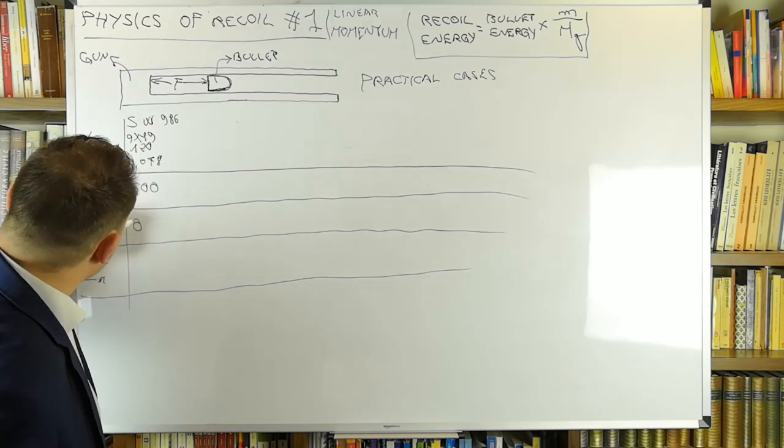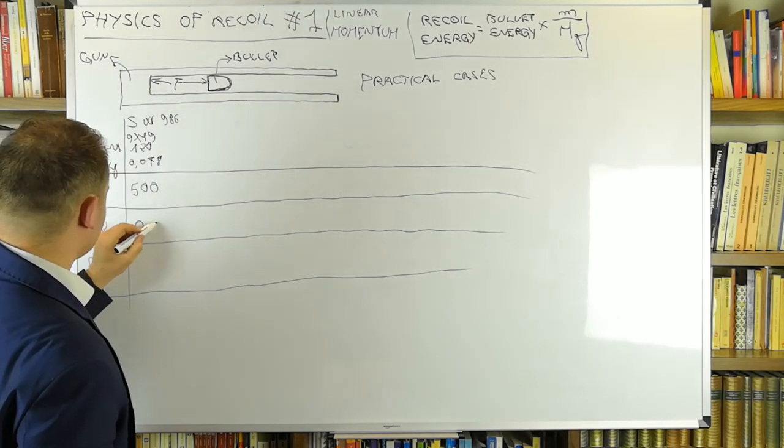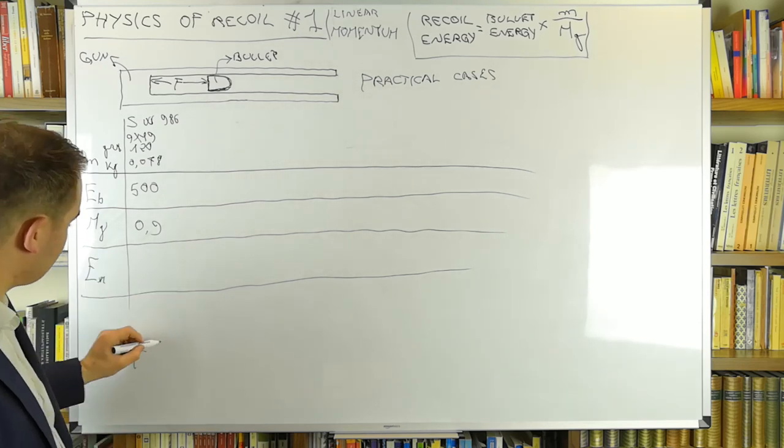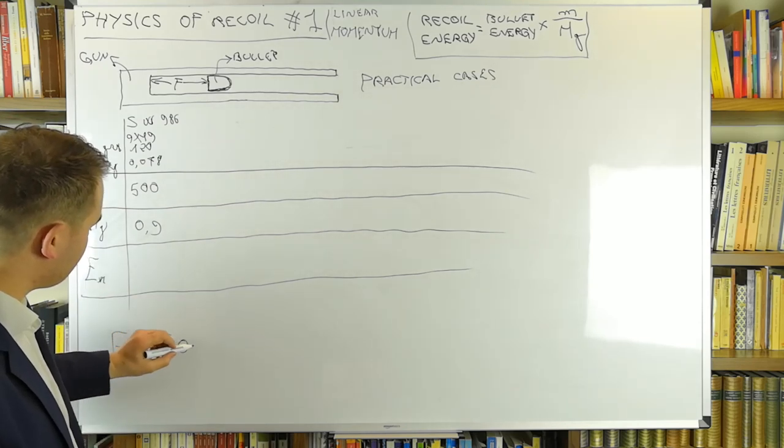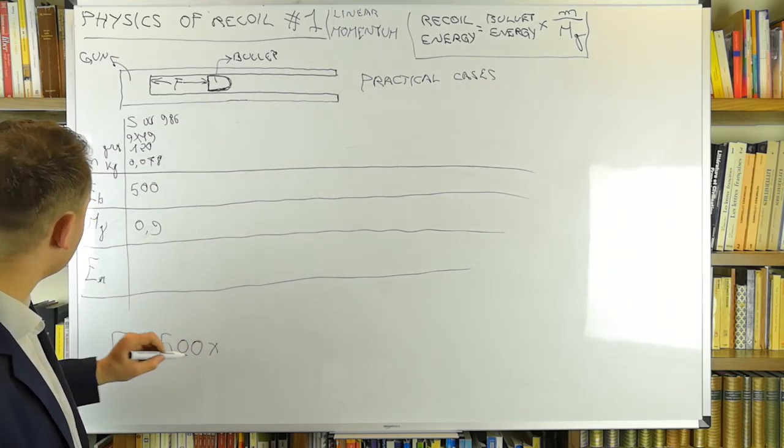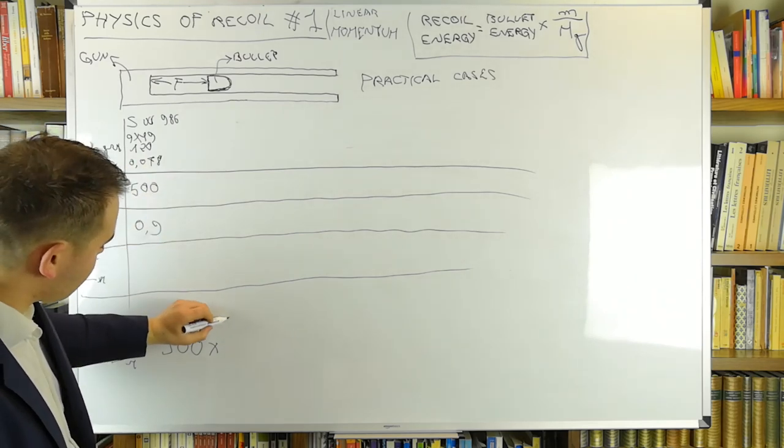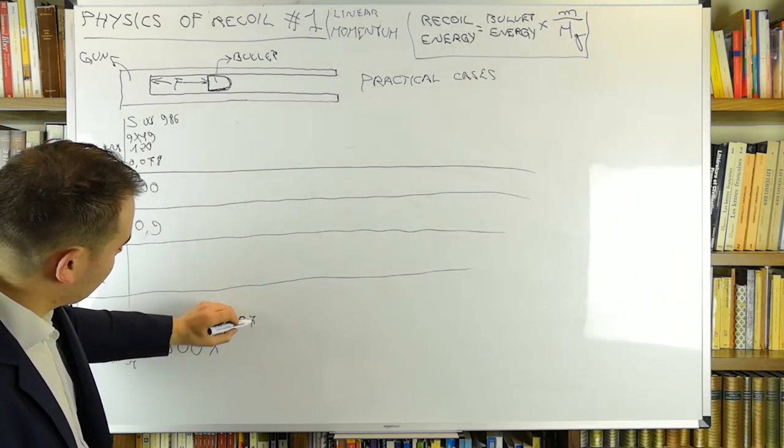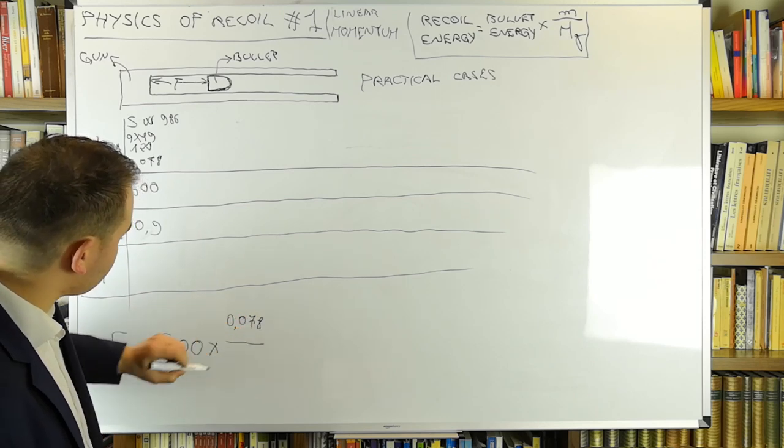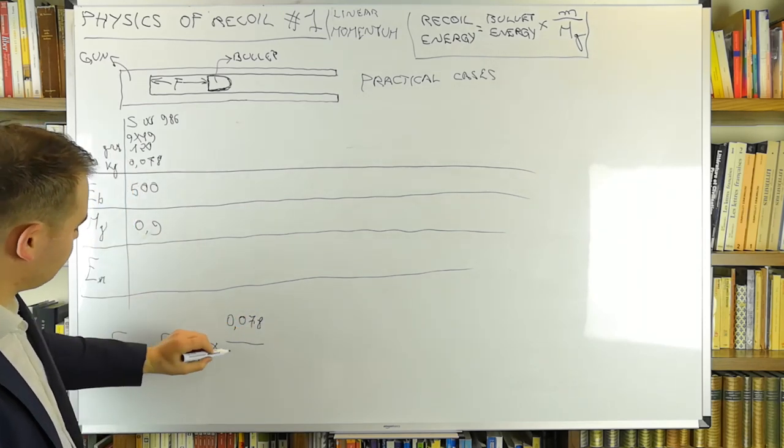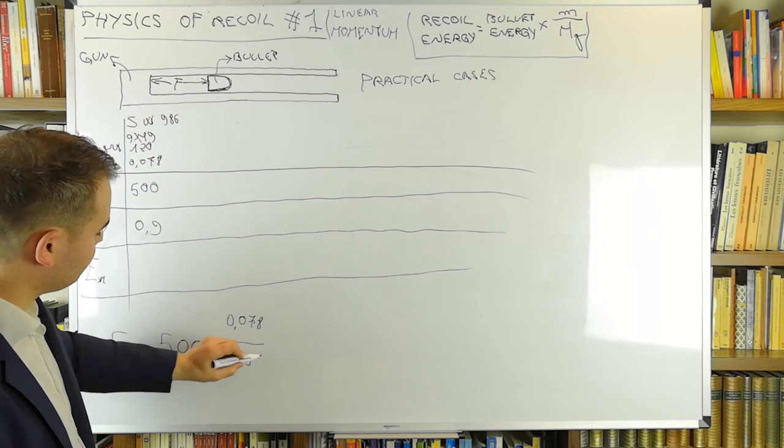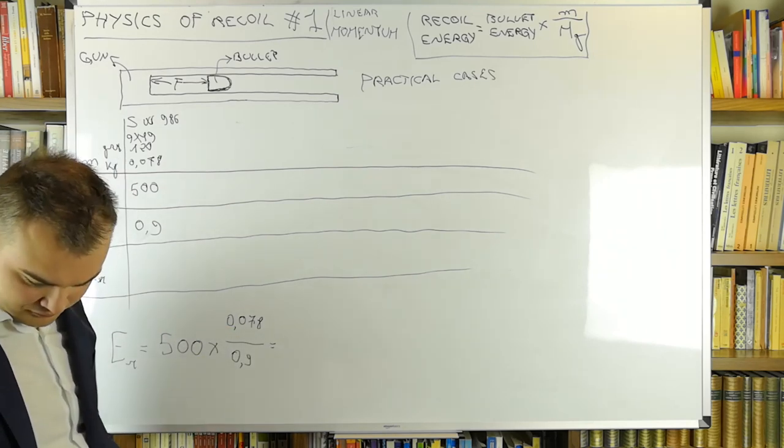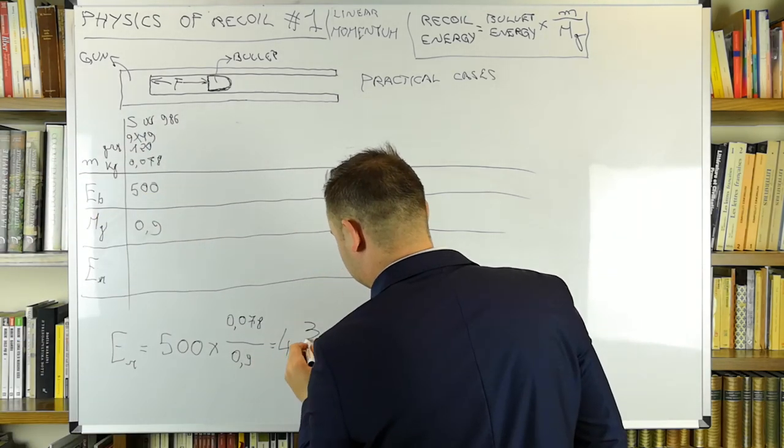Let's do some practical calculations. I picked some significant guns, you will soon discover why. First off, a 9x19 revolver like the Smith and Wesson 986. We've got a 120 grain bullet at a kinetic energy of about 500 joules from a gun weighing 0.9 kilos. Just follow the formula and we get a result of only 4.3 joules of energy. That's why you better stay behind the gun than in front of it.